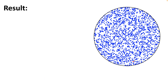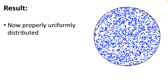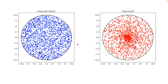Looking at the result, the distribution of points is now much more uniform compared to the previous one. Placing them side by side, the version using sqrt(rand()) is uniformly distributed across the whole circle, while the version using rand() only is non-uniformly distributed and denser around the origin. Now we'll continue to show how to code this in Python.